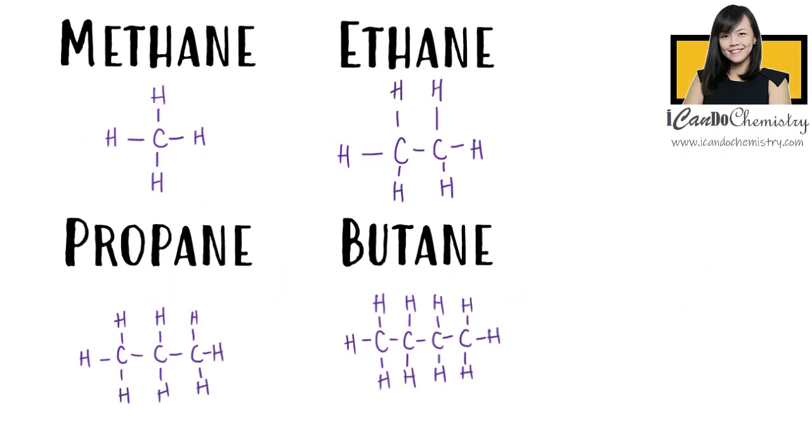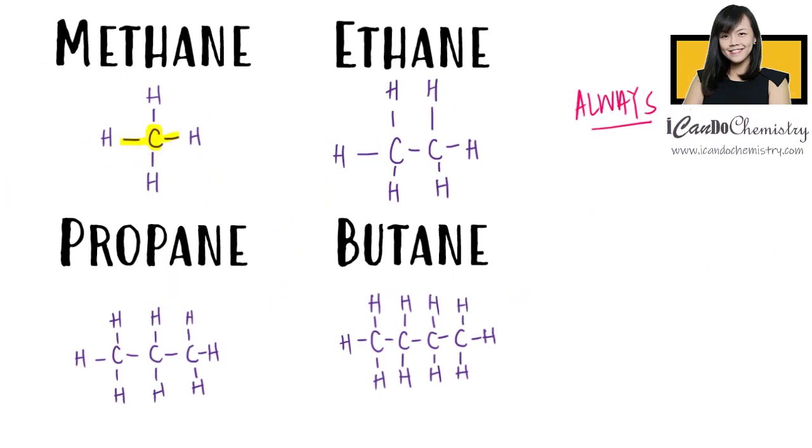If you look at each of these alkanes, you should notice carbon always forms four bonds while hydrogen always forms one bond. When you are familiar with structure drawing of organic compounds, you should not need to depend on dot and cross diagrams to achieve the full structural formula of organic compounds to save time. Practice more and you will be more confident in writing full structural formulas of organic compounds.